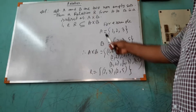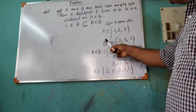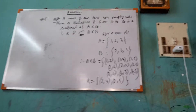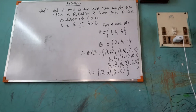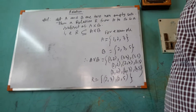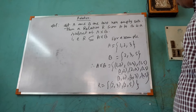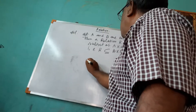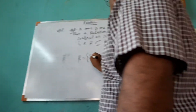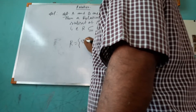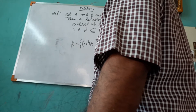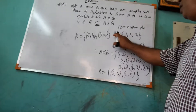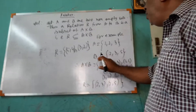R is a relation of two non-empty sets A and B. This is one example of a relation. Now suppose if I say R equal to {(5,4), (3,2)} — is this a relation of sets A and B? No.